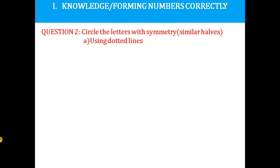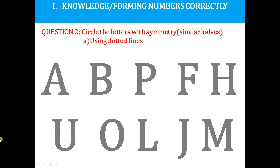Next, question two: find from the letters with symmetry — meaning similar halves — by using dotted lines. Some alphabets are given. We have to divide the alphabets into similar halves by using dotted lines. Let's divide the letters using dotted lines.